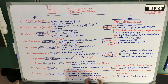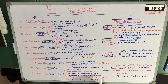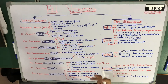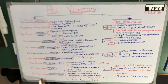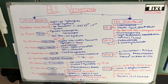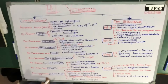For absorption, we need an intrinsic factor. We need an intrinsic factor in the stomach, which actually helps in the absorption of cyanocobalamin. If the intrinsic factor is not present, we are not going to absorb cyanocobalamin.